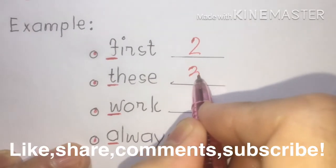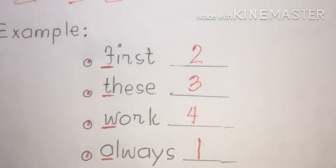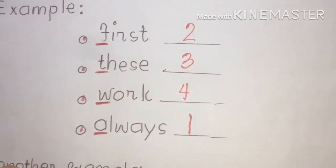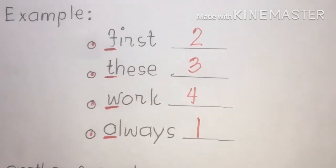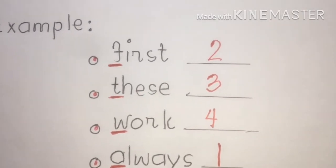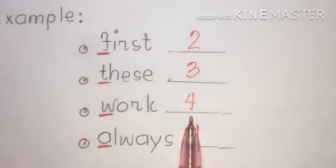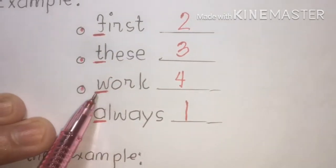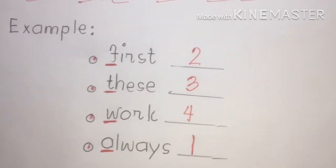So our arrangement is: always, first, this, and then the last word. It is easy because we underlined the first letter of each word. The order is: always first because A is first, then F second, T third, and W last. That is our alphabetizing word example — always, first, this, work — arranged in alphabetical order.